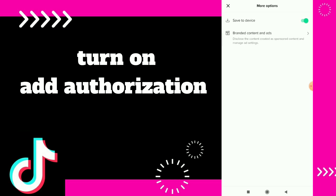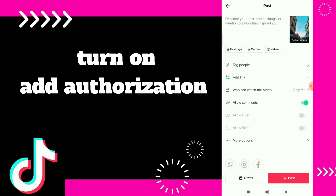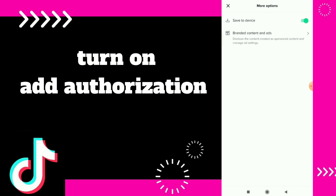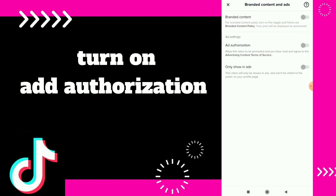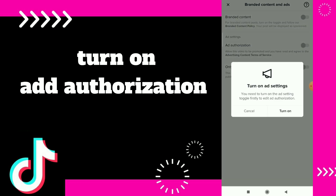First, go to your TikTok. Once you create a video and click on Next, you will find those options. Fix those options, then click on More Options, then click on Branded Content and Ads. Wait for a second and you will find Authorization Settings.